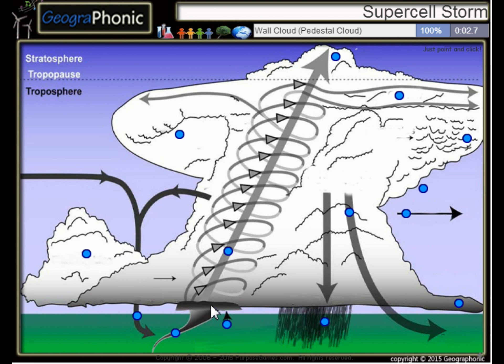Here we see a wall cloud or a pedestal cloud. This is of course a possible tornado or funnel. This is a shelf cloud.